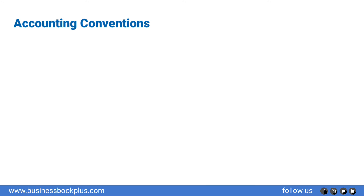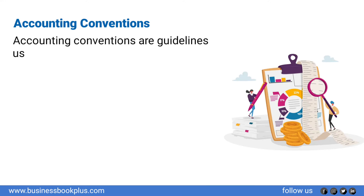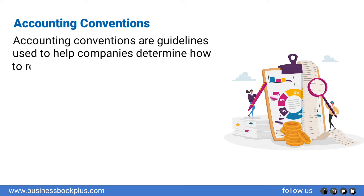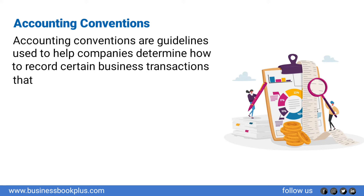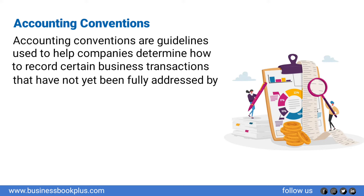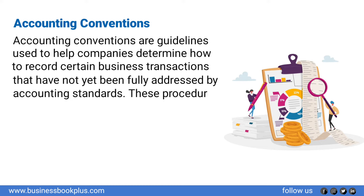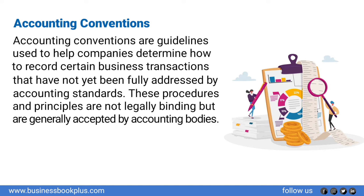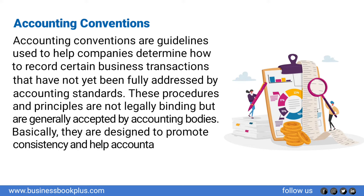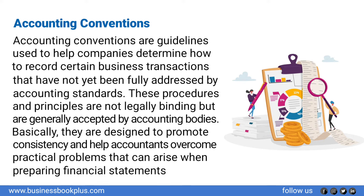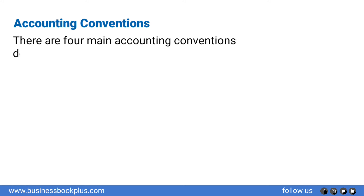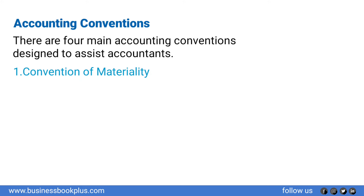Accounting conventions are guidelines used to help companies determine how to record certain business transactions that have not yet been fully addressed by accounting standards. These procedures and principles are not legally binding but are generally accepted by accounting bodies. They are designed to promote consistency and help accountants overcome practical problems that can arise when preparing financial statements. There are four main accounting conventions: convention of materiality, convention of consistency, convention of full disclosure, and convention of prudence or conservatism.